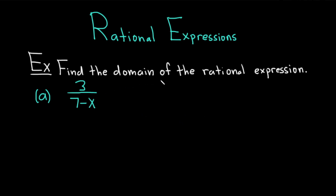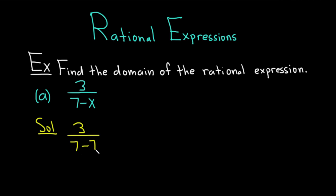Find the domain of the rational expression. In part A, we have 3 over 7 minus x. The domain of the rational expression is the set of all x's that we can plug into the expression that makes sense. If you look at this, the only value of x we can't plug in is 7. Because if I were to put a 7 where the x is, then you get 3 over 7 minus 7, which is 3 over 0. You can't have 0 on the bottom.